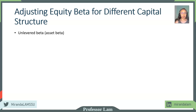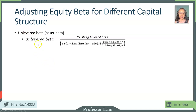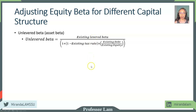What we want to do is get to the systematic risk that's solely associated with business risk. We call that the asset beta or unlevered beta. This is beta that does not include any financial leverage. It is defined as the existing levered beta — the beta that we come up with from our regression. So this is the historic systematic risk.